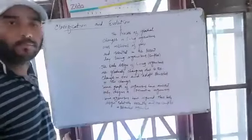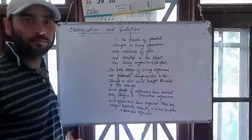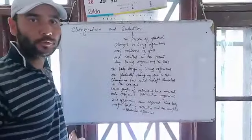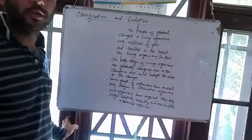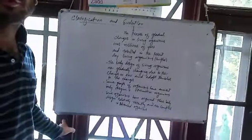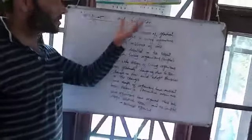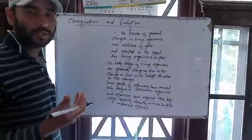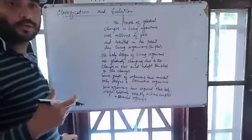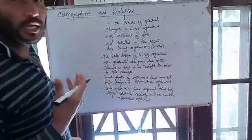Hello, my dear students. Today we have an important topic to discuss, that is classification and evolution. It is a very important topic regarding the examination point of view — that means what is the relation between classification and evolution, how do we classify living organisms, and what is the relation between the classification of organisms and evolution.